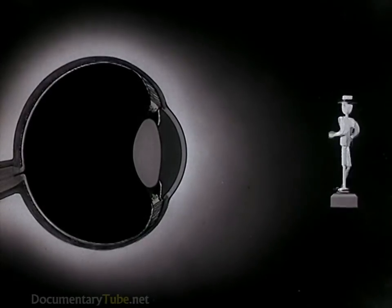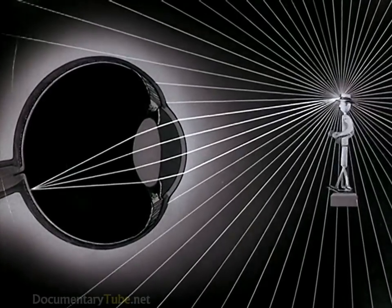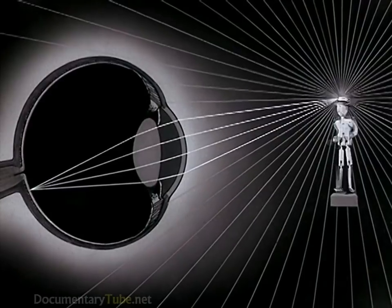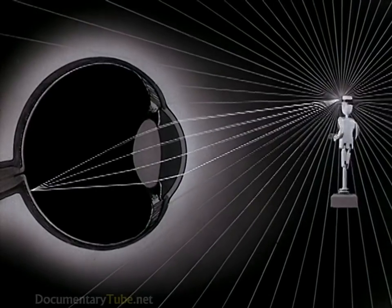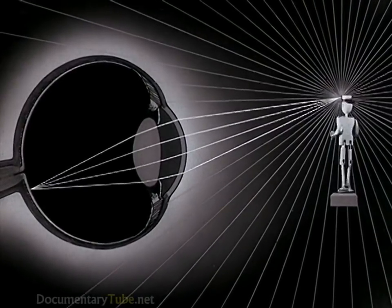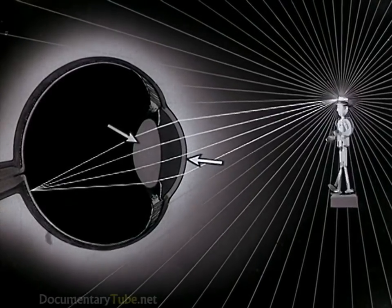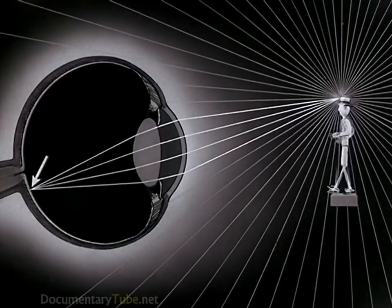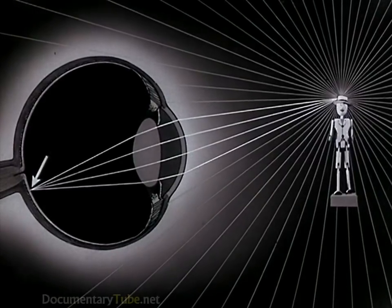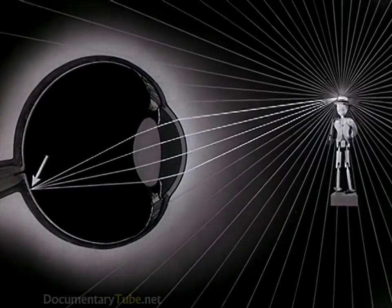From each point on an object, the light is reflected in all directions. All the rays of this reflected light, which are aimed toward the aperture of the eye, are bent by the cornea and lens so that they come to a single point inside the eye. This is what we mean by focusing.